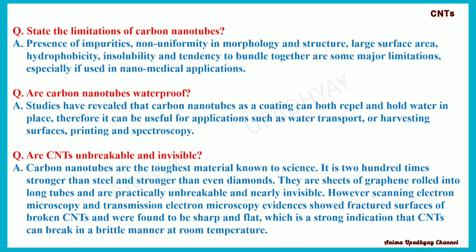Are carbon nanotubes the toughest material known to science? They are 200 times stronger than steel and even diamonds. They are sheets of graphene rolled into long tubes and are practically unbreakable and nearly invisible. However, scanning electron microscopy (SEM) and transmission electron microscopy (TEM) evidence showed fractured surfaces of broken carbon nanotubes to be sharp and flat, a strong indication that carbon nanotubes can break in a brittle manner at room temperature.